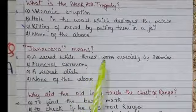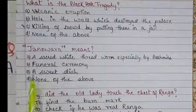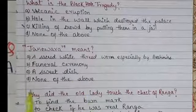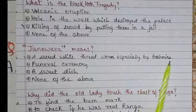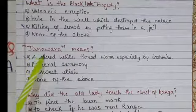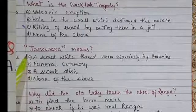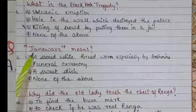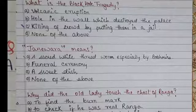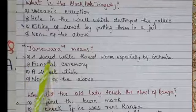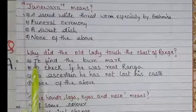What does Janivara mean? Option A: A sacred white thread worn specially by Brahmins, Option B: Funeral ceremony, Option C: A sweet dish, Option D: None of the above. Option A is correct — Janivara is a white thread worn specially by Brahmins, showing the person is vegetarian. Those who went to Bangalore and changed their eating pattern used to remove it, but Ranga still had his Janivara even after studying in Bangalore.